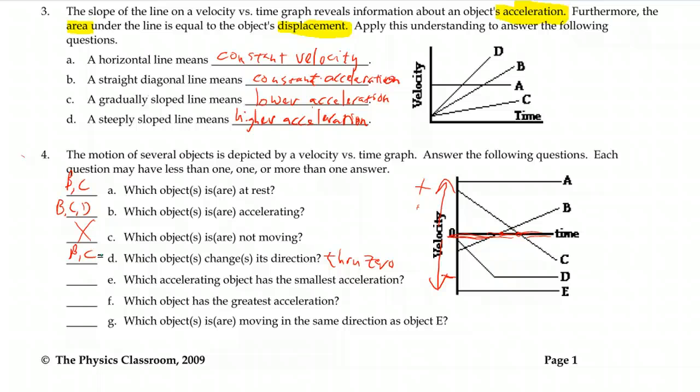Which accelerating object has the smallest acceleration? You'd want to look for the flattest slope. It looks like B is relatively shallow. C is negative, but it's steeper than B. And D is even steeper than C. So the one with the least amount of slope is letter B.